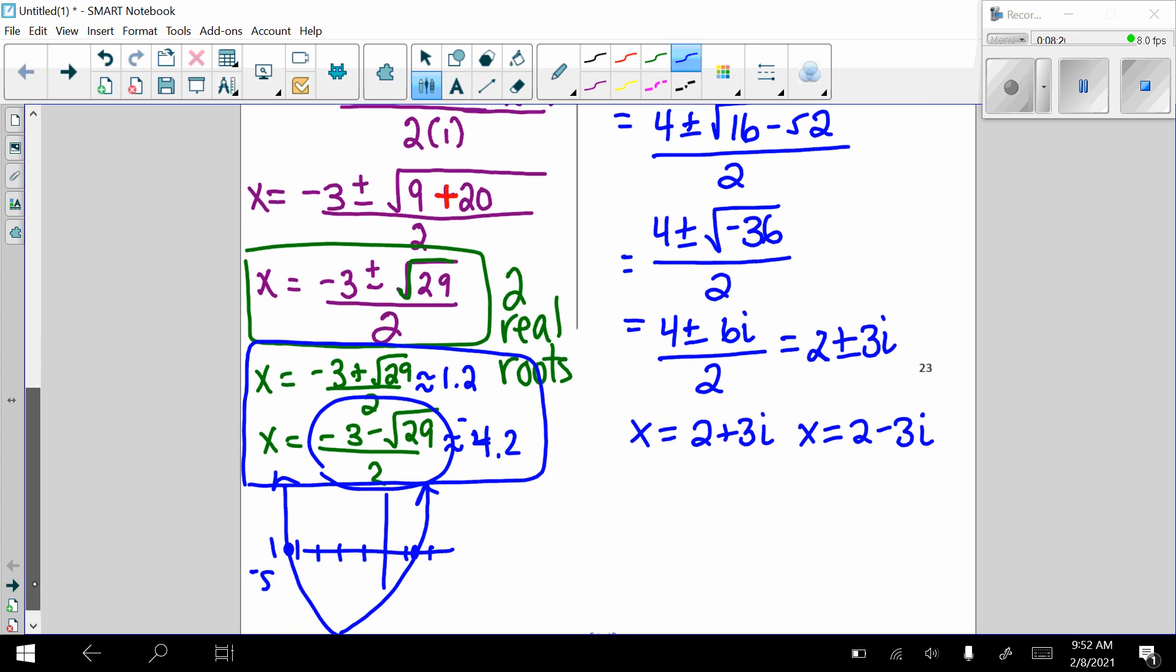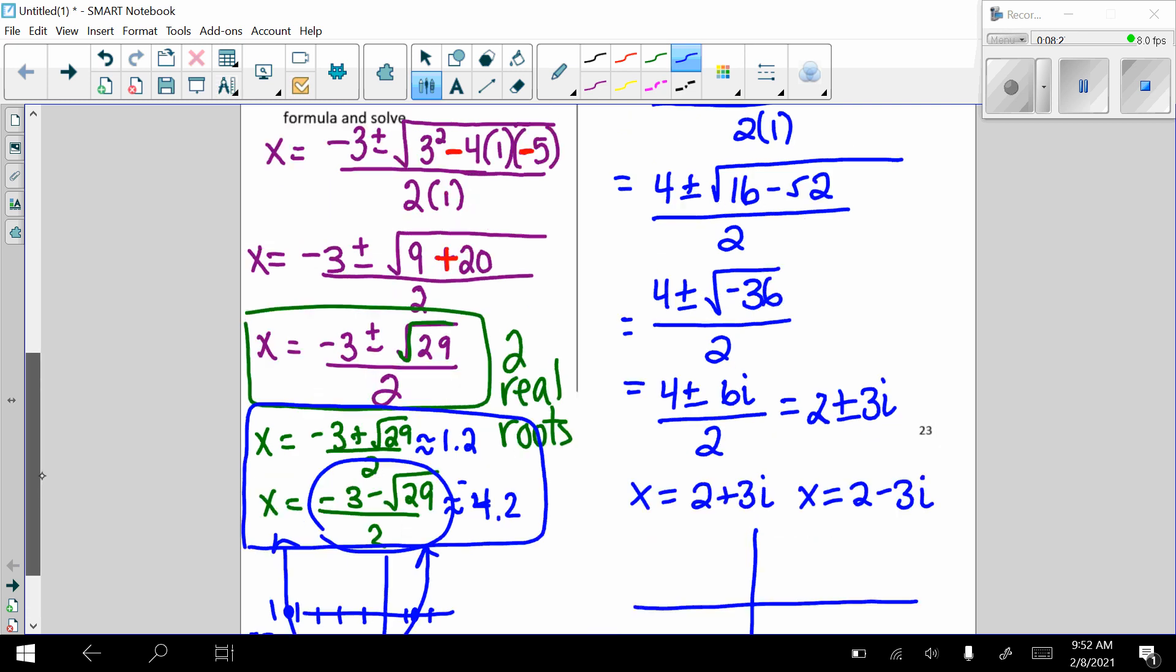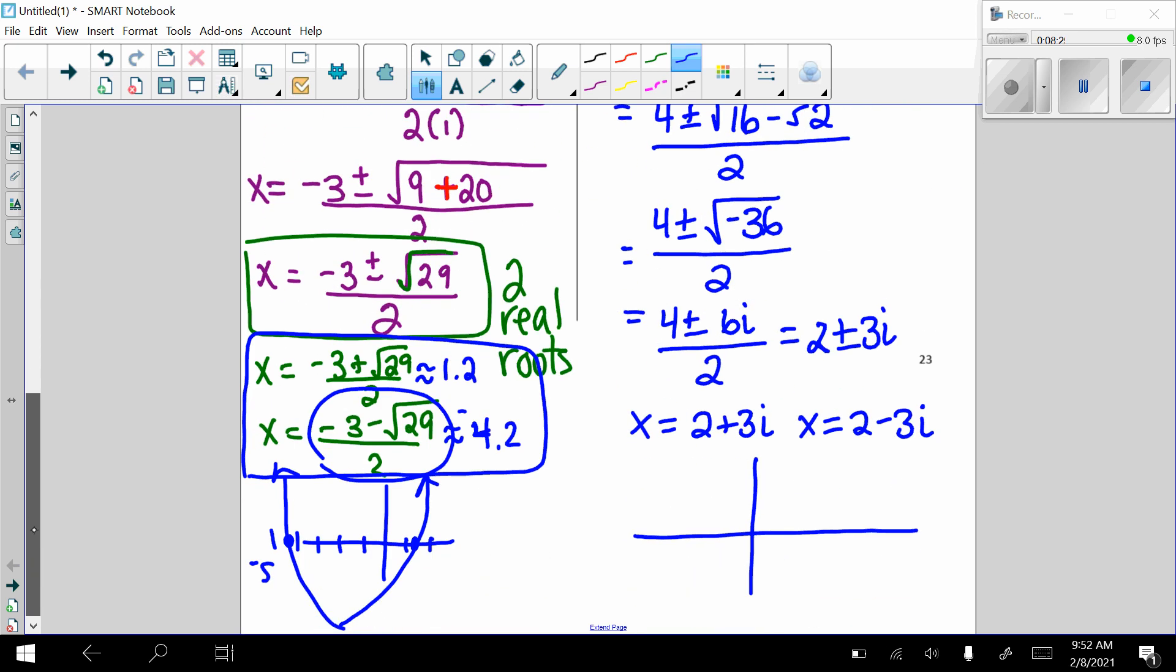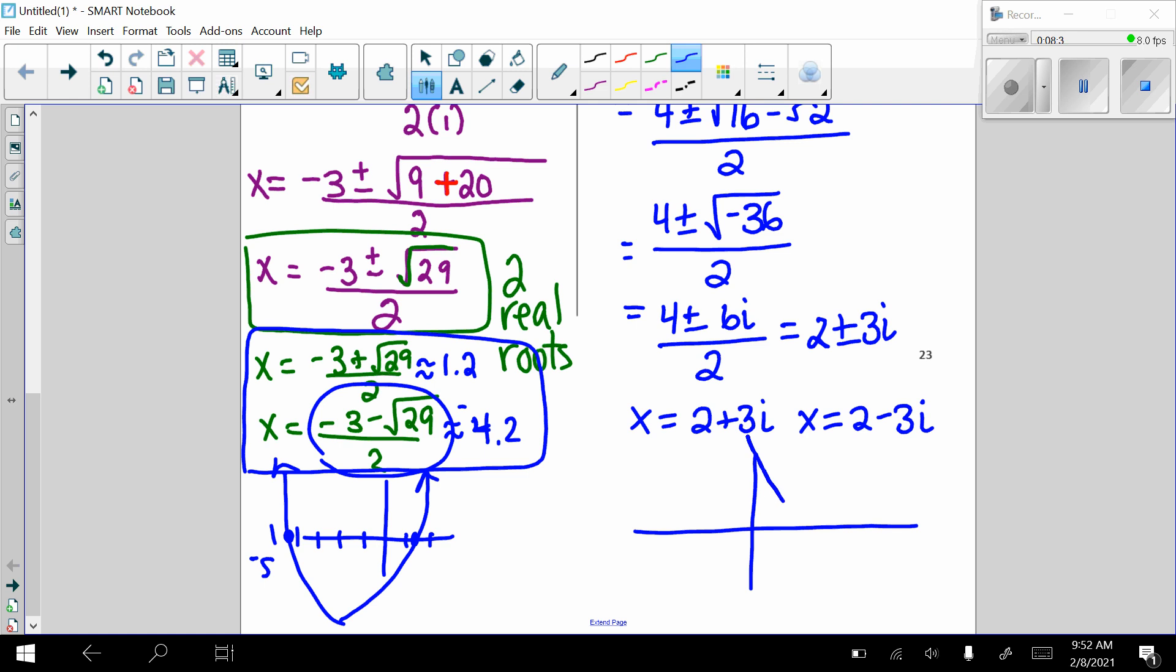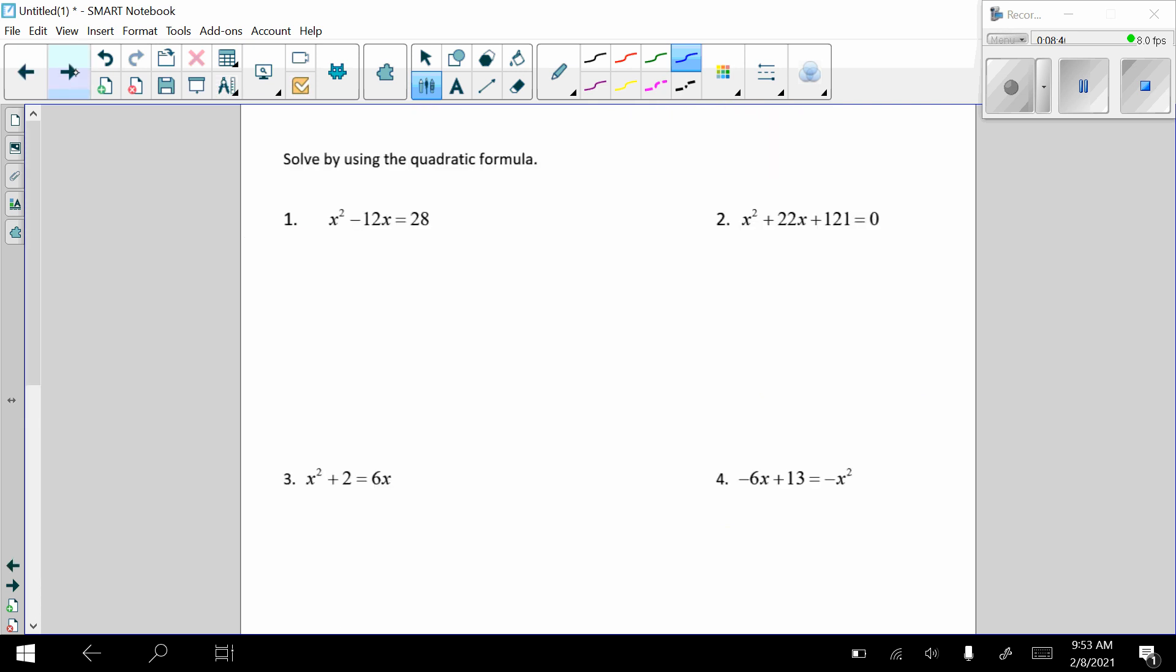In terms of a graph, this would be one where we don't see it crossing through the x-axis. All right, it would look, it was a positive x squared, right? Yes, it would look something like this. It's up here somewhere. Okay, passing through 13, right? That was our y-intercept, but it's never going to cross the x-axis. Okay, hope that makes sense. Let's go to the next page.